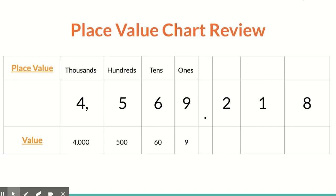That first place value to the right of the decimal is what we call our tenths place, and this is how it looks as the value — you'll see zero point two. These are called tenths because it takes 10 of them to create one whole; 10 tenths is equal to one whole. Next, the one is in what we call the hundredths place, and if we have one hundredth, it looks like this.